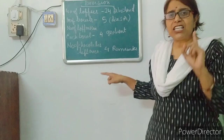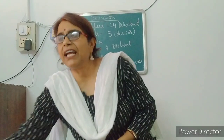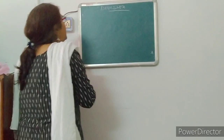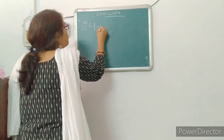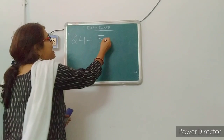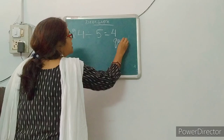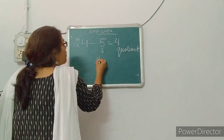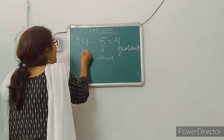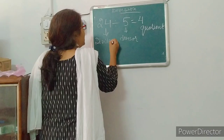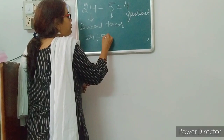The number to be divided is called dividend. Here, 24 is called dividend. We are distributing this 24 in 5 bowls — 5 is called divisor. After distributing the chocolates, we are able to put 4 chocolates in each bowl. That 4 is called quotient — the answer of division. The division sum is: 24 divided by 5 is equal to 4.